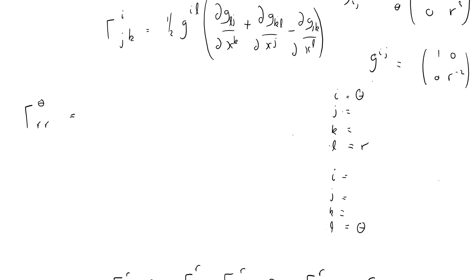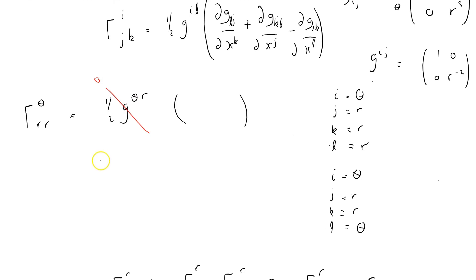For Γ^θ_rr with l equals r: one-half g^θr — that's an off-diagonal element, so it's zero. With l equals theta: one-half g^θθ times the derivatives. We need ∂g_θr/∂x^k — but that's off-diagonal, so zero. Then ∂g_θr/∂x^j — also off-diagonal, zero.